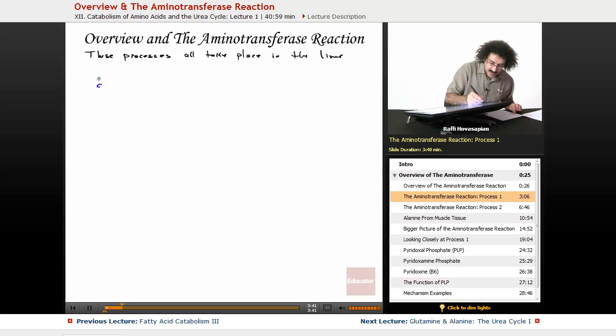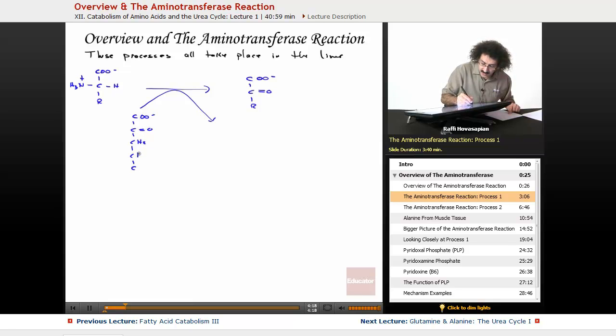So we have COO, this is R, we have H and we have our NH3+. So this is just some amino acid that is either inside the liver or came from outside, from dietary protein, things like that. So what happens is the following. We have COO minus, 1, 2, 3, 4, 5, O minus. This is alpha ketoglutarate.